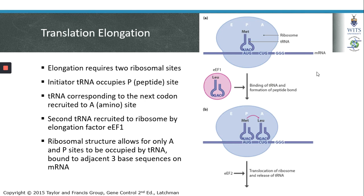We will now start discussing the process of translation elongation in detail. Elongation requires two ribosomal binding sites. The initiator transfer RNA-methionine will bind to the start codon and occupy the P site in the large ribosomal subunit. The RNA corresponding to the next codon — in this case CUG — and its corresponding amino acid leucine and transfer RNA will bind at the A site, or the aminoacyl site.